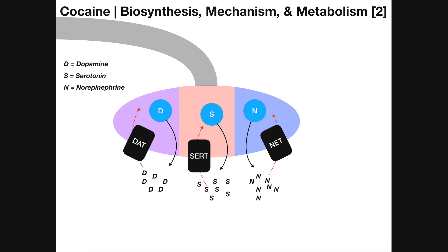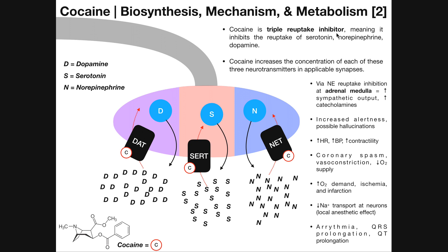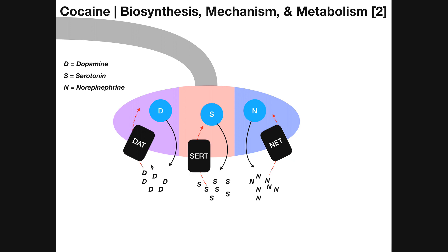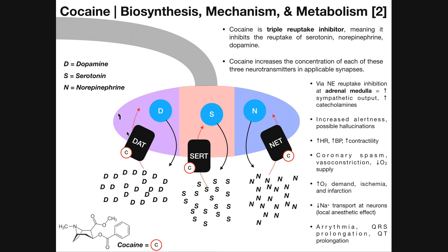So what happens if you add cocaine to the equation? Cocaine is what we call a triple reuptake inhibitor, meaning it inhibits the reuptake of all three neurotransmitters — dopamine, serotonin, and norepinephrine. What cocaine is doing is binding to these reuptake transporters and simply blocking them. If you're inhibiting these reuptake transporters, anytime one of these neurotransmitters is released into the synapse it's not going to be able to be reuptaken. So while cocaine is acting, you're going to have a higher level of all of these neurotransmitters in the synapse.